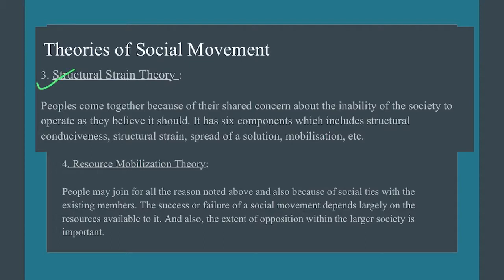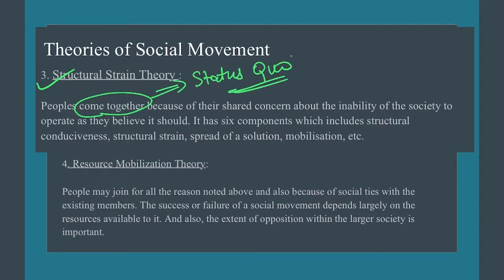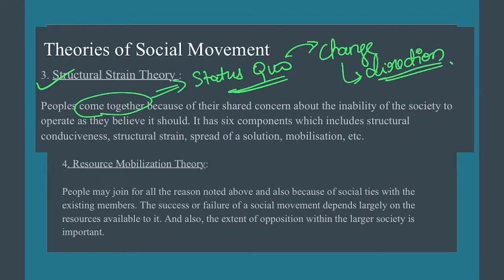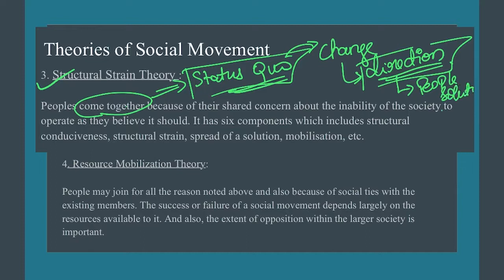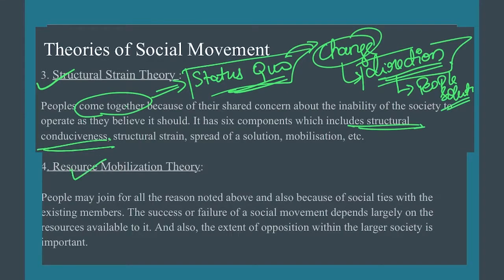The Structural Strain Theory says that a set of people come together, share a concern that the existing status quo is not helping society, and desire to change it. They mobilize people, come up with solutions, explain the structural strain that the present system is inducing, and propose structural conduciveness — how society should be redesigned to attain the desired change. The next theory is the Resource Mobilization Theory.